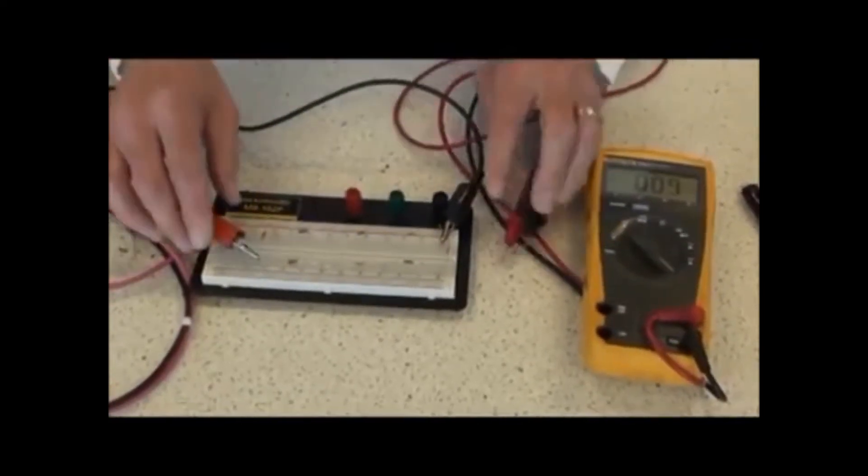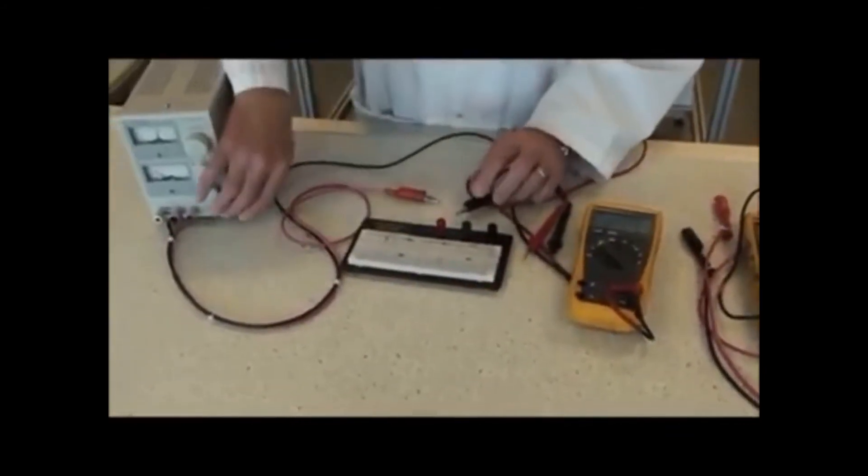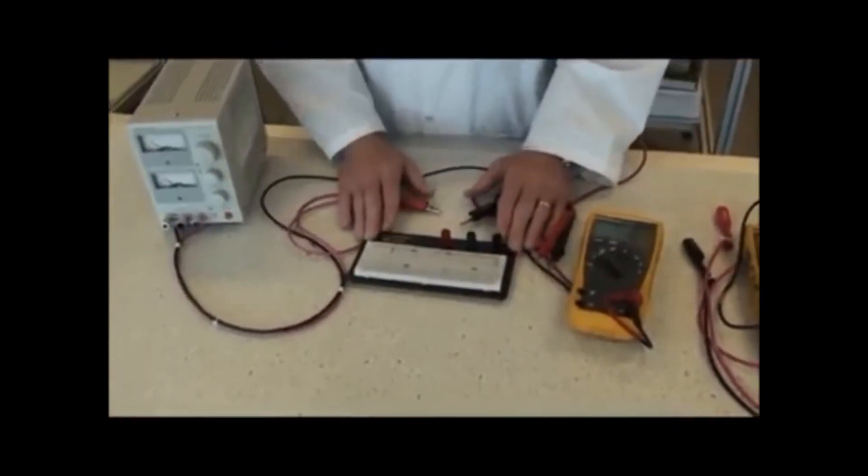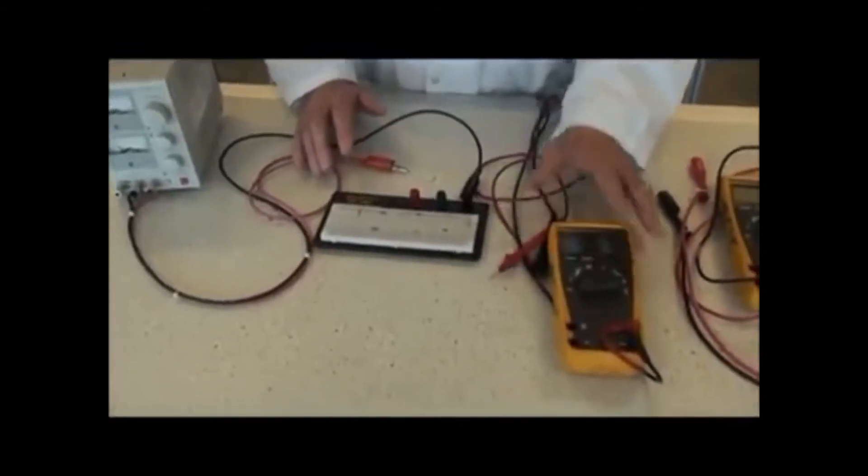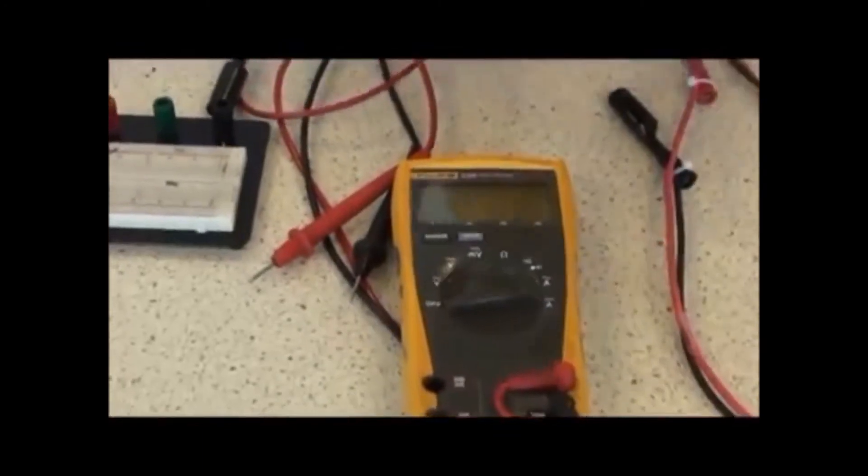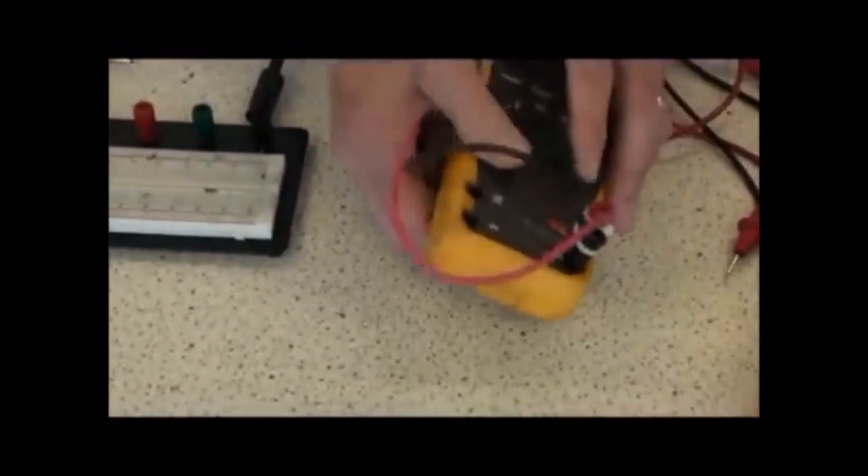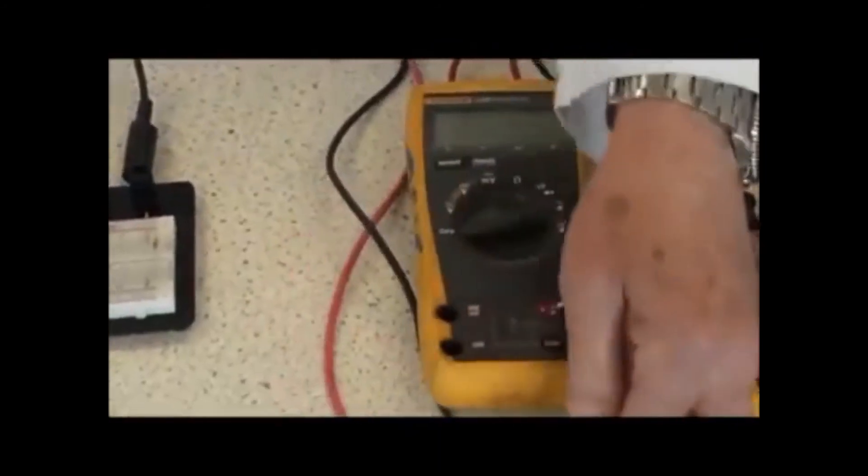That completes the measurement of resistance and voltage in a simple DC circuit. I would like to explain how to measure current. I'm going to use another meter here using clip leads. They're easier to work with and hold on to the component much easier.